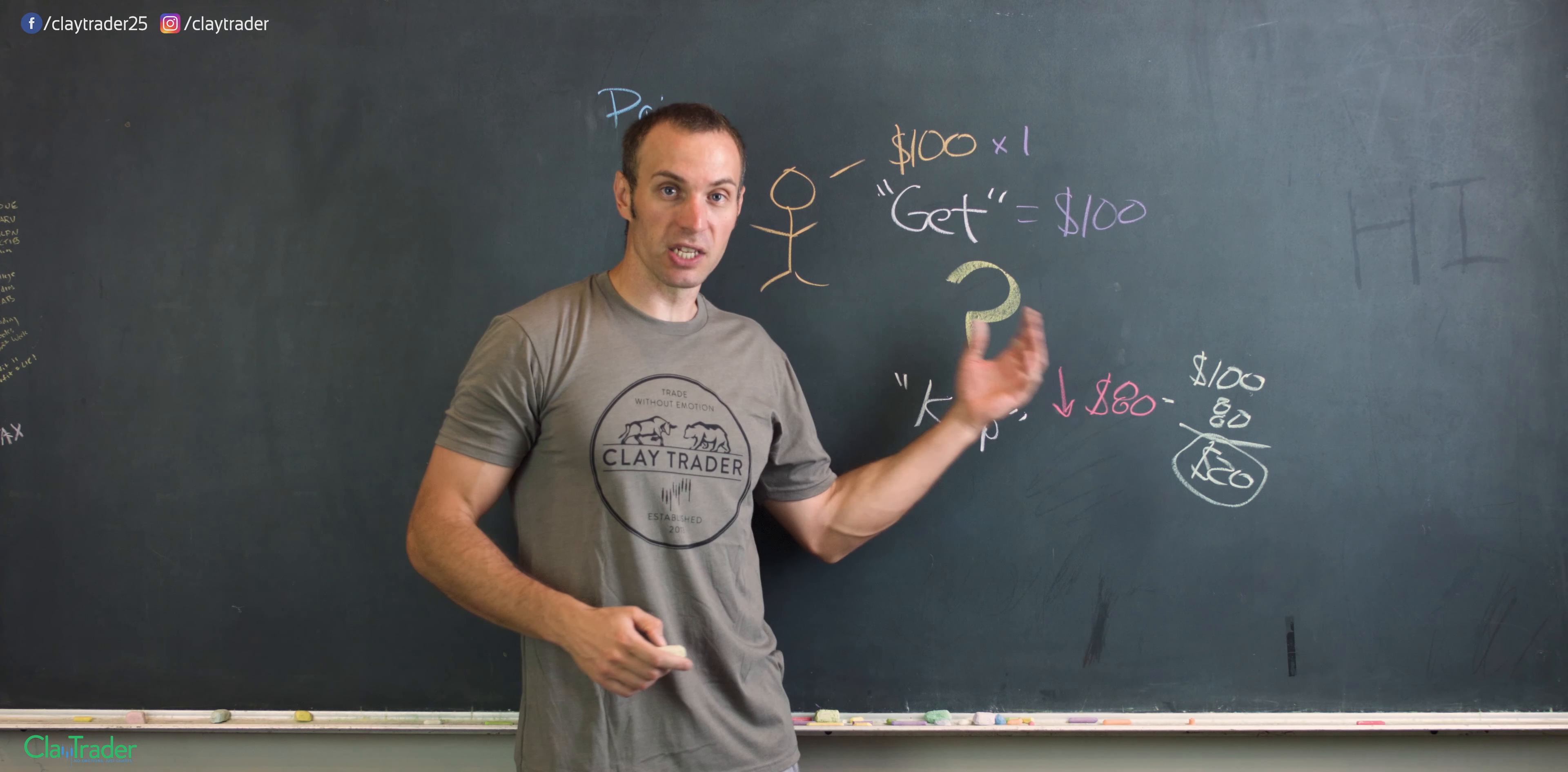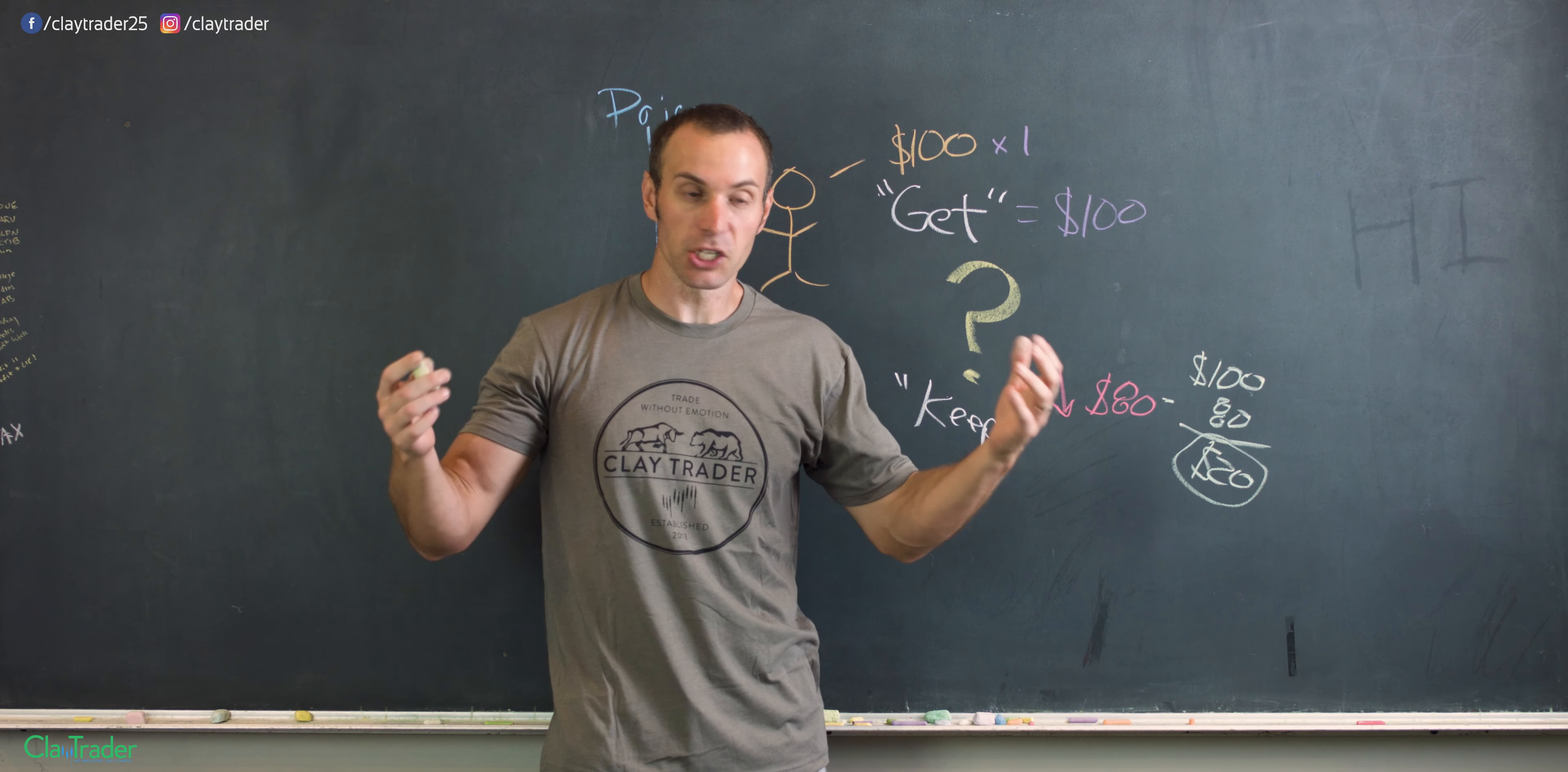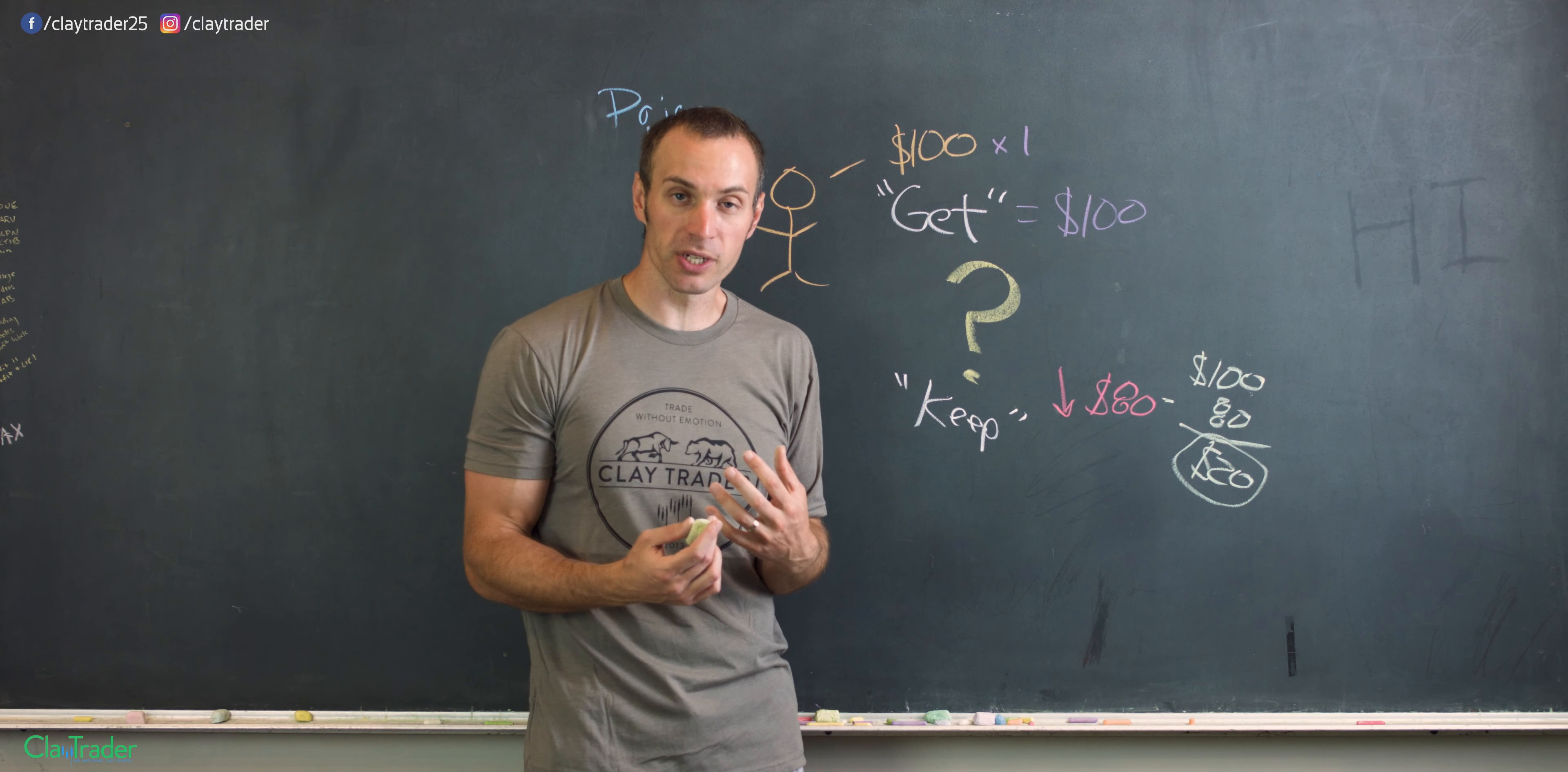So in trading jargon, in this situation, John would have made $20 per share. Now, he only got one share, but had he gotten 10 shares, that would have been bigger. Had he had 100 shares, that would have been even bigger. But that's how the math works out.